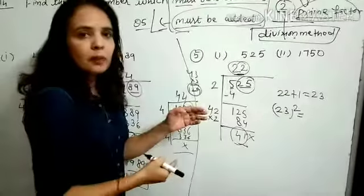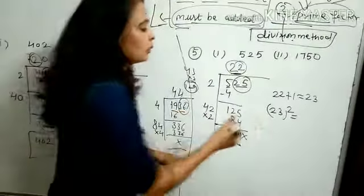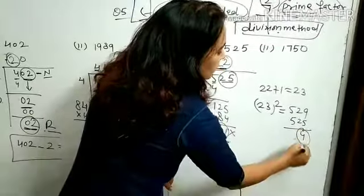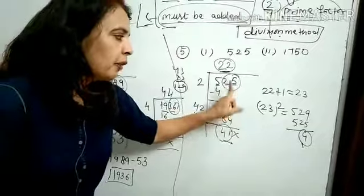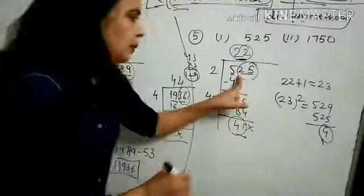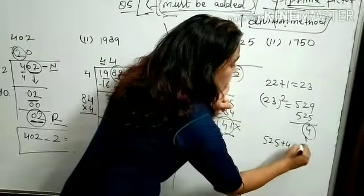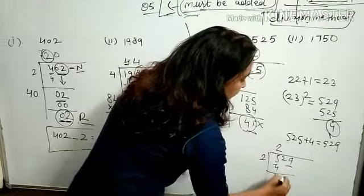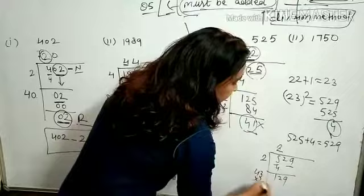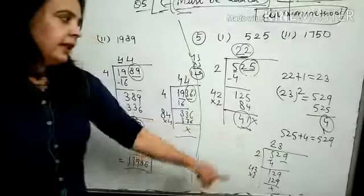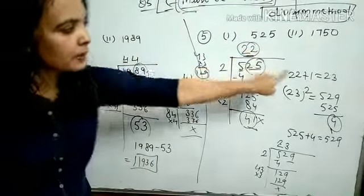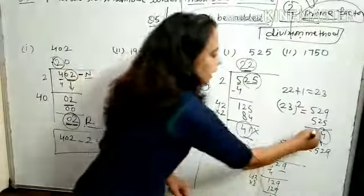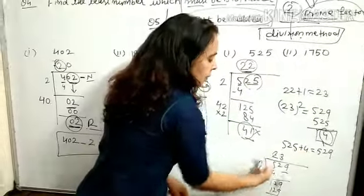Now find the square of 23. Since we asked you to learn squares up to 30, you should know: 23² = 529. Then subtract the original number from this square: 529 − 525 = 4. So 4 is the number that must be added. If we add 4 to 525, we get 529. Check: is 529 a perfect square? Yes — 23²=529, remainder 0. So the method is: quotient + 1, square it, subtract original number — that's what must be added.